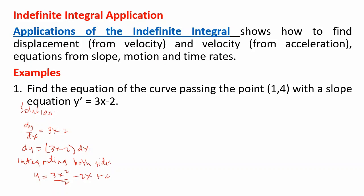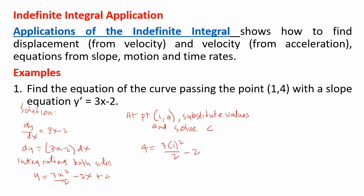At point (1, 4), substitute values and solve for C. Substituting: 4 equals 3 times 1 squared over 2 minus 2 times 1 plus C. Solving gives C equals 9 over 2.